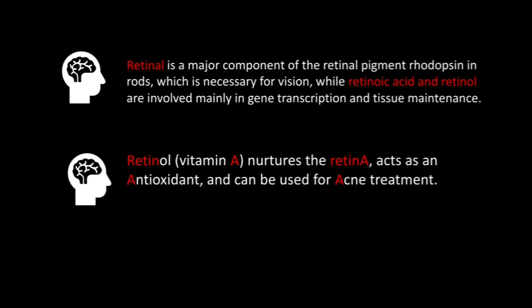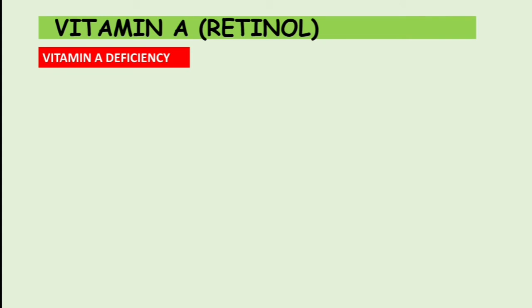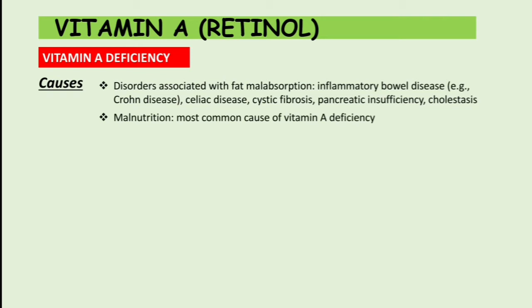Now let's talk about pathologies. Deficiency occurs when vitamins are not supplied in adequate quantities. Causes of Vitamin A deficiency include disorders associated with fat malabsorption — for example inflammatory bowel diseases like Crohn's disease, celiac disease, cystic fibrosis, pancreatic insufficiency, and cholestasis. Another major cause, particularly in developing countries, is malnutrition, which is the most common cause of Vitamin A deficiency globally.